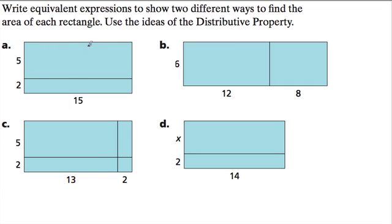Let's look at the first one. Notice this rectangle is really 7 by 15. So to find the total area of this rectangle, we could write 7 times 15. That's one way to write it.